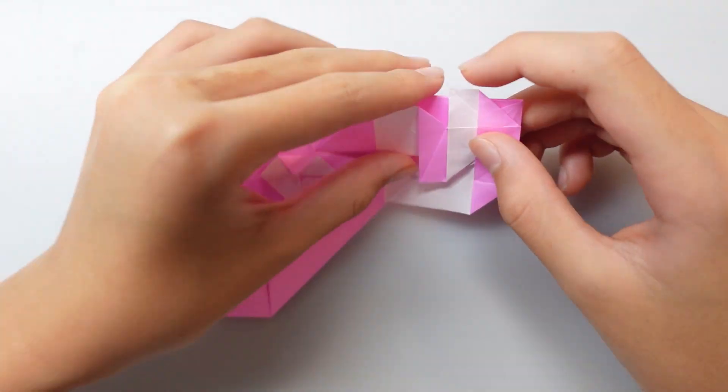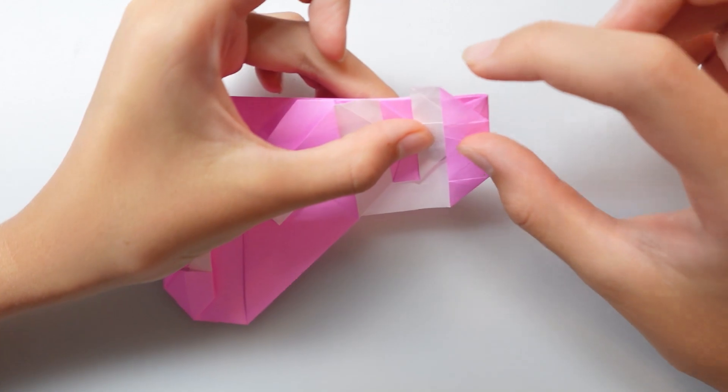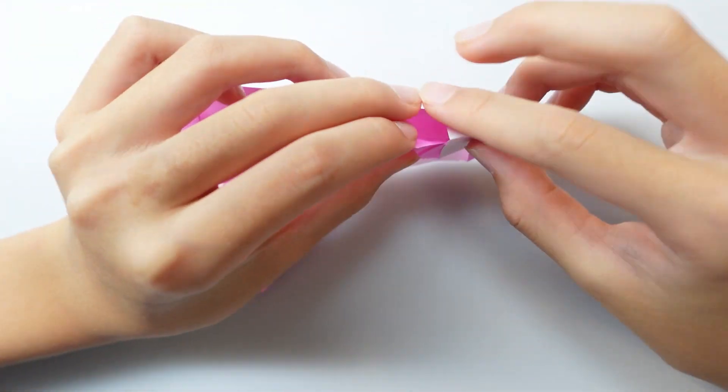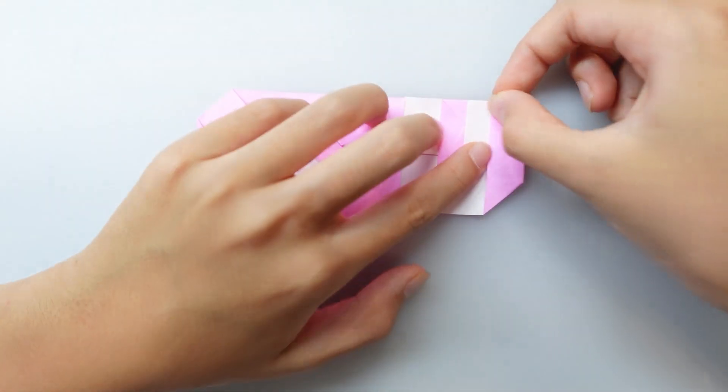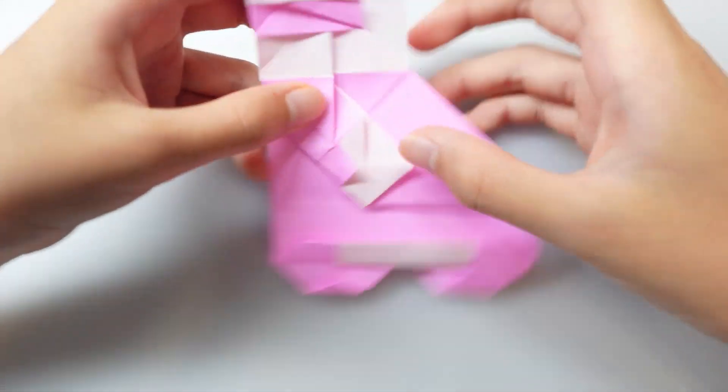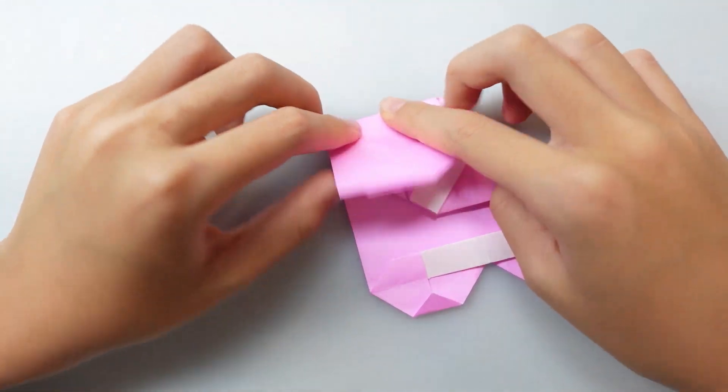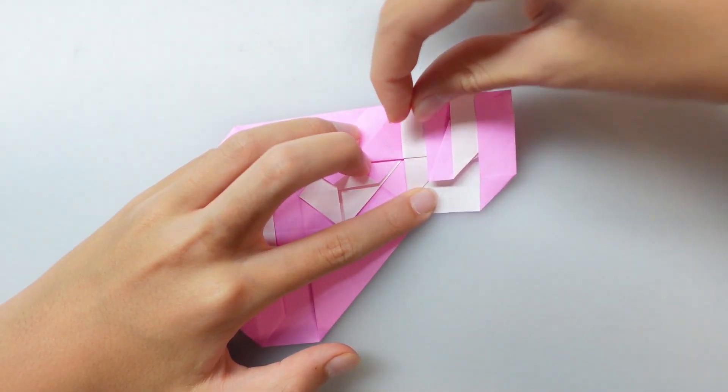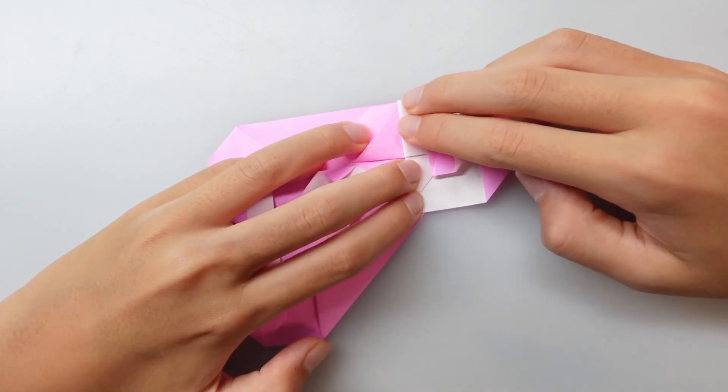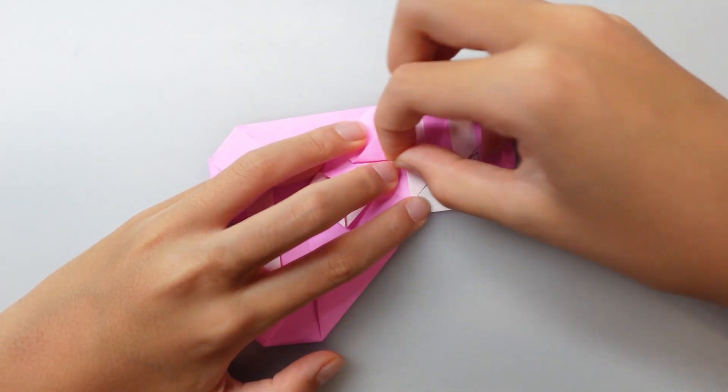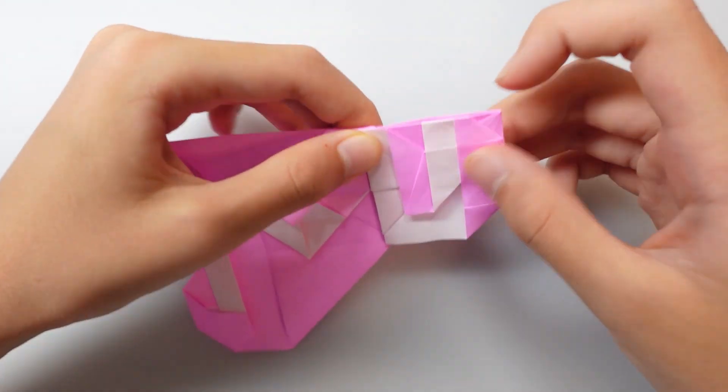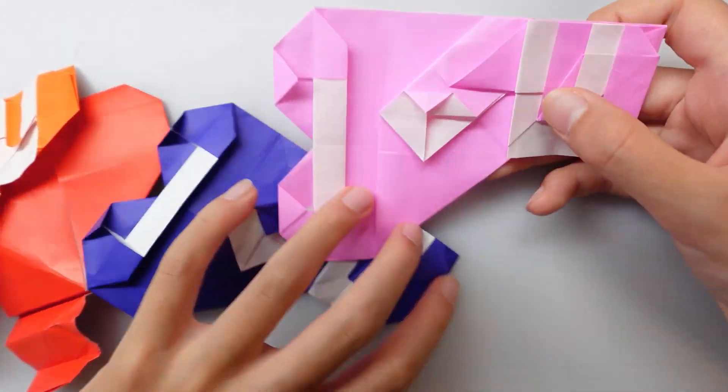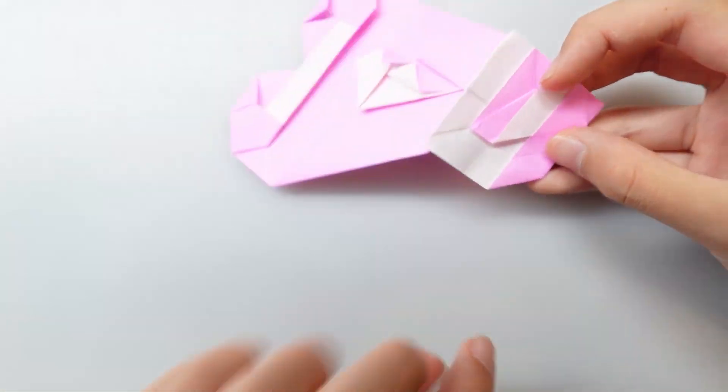Alright, so right now we have a goofy U that we want to fix. So let's first fold back and then tuck it into here. And now let's fold and make these to the same length. My mom will be overflowing with my gifts.